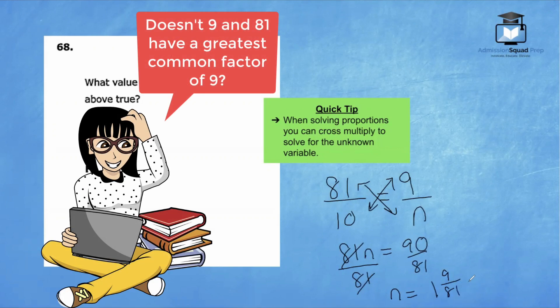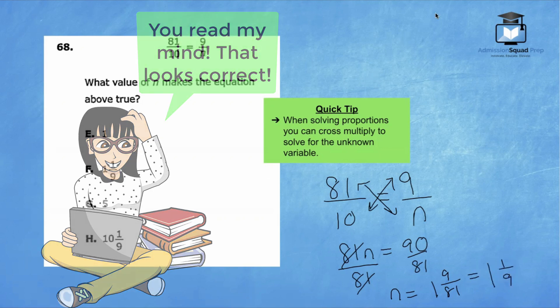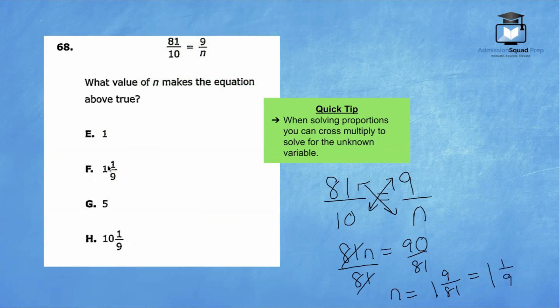So n equals 1 and 9 over 81. But wait, we can still simplify this answer even further. We will have 1 and 1 ninth. So the correct answer is choice F.